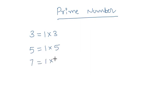Similarly, if we take 7, 7 can be written as 1 times 7. It has exactly two factors.